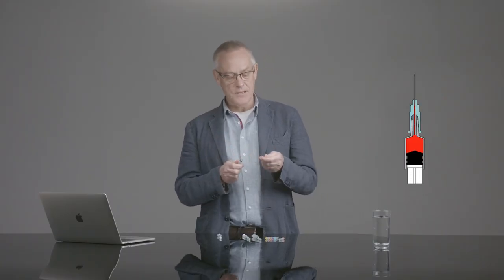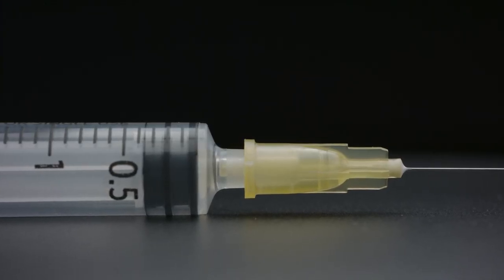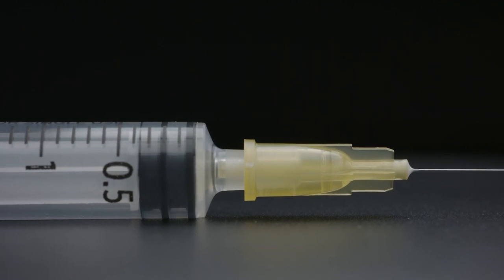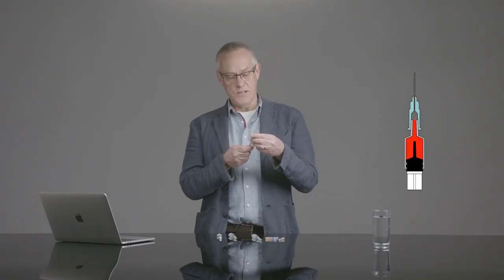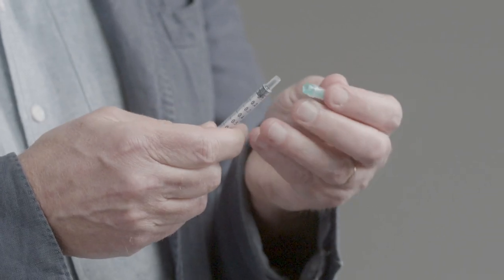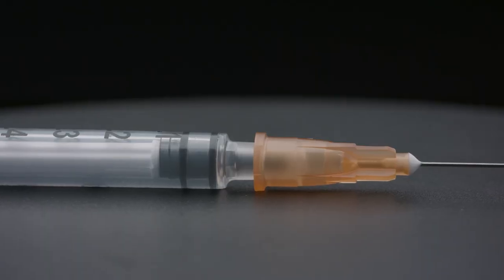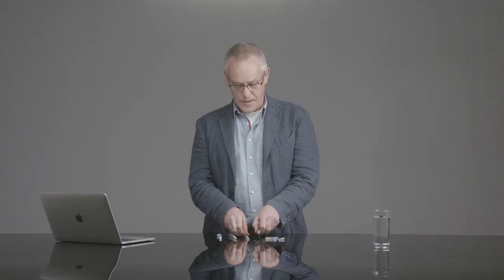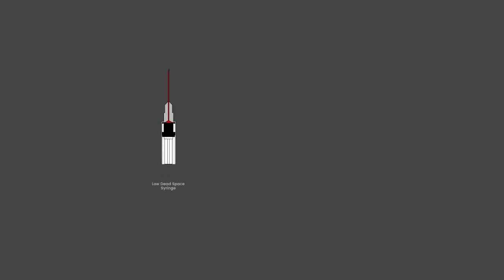Next are low dead space needles with the plastic spike that goes into the tip of the syringe, reducing dead space to between 10 and 35 microlitres. Then there are reduced dead space syringes, which only reduce dead space by about 50% to 50 microlitres, as the remaining dead space is all in the hub of the needle. Finally, the highest risk with 100 microlitres of dead space is a high dead space needle and syringe combination.